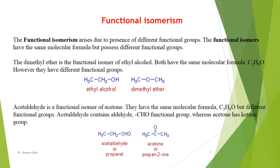Next is functional isomerism. For example, ethyl alcohol has the OH group as its functional group, and dimethyl ether has an ether functional group. Both have different functional groups but the same molecular formula, C2H6O. Similarly, acetaldehyde has the CHO aldehyde functional group, while acetone has the ketone functional group, and both have the same molecular formula, C3H6O.